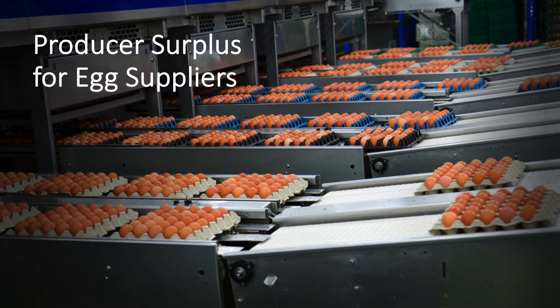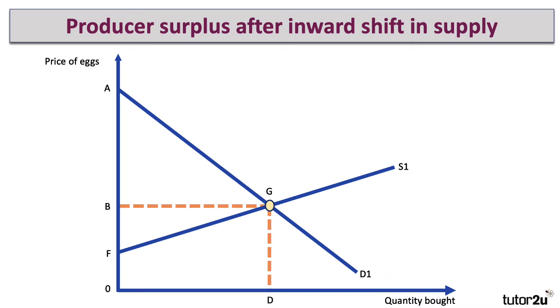Let's take a good example of a business under pressure. At the moment, many egg suppliers are being affected by rising costs. The cost of energy has gone up, and the consequences of avian flu on the size of bird flocks have caused some quite severe shortages of eggs. So we'll take that example and look at the effect of an inward shift of supply.